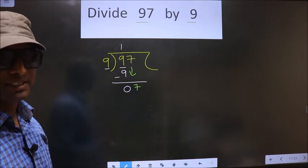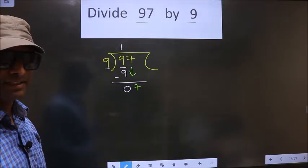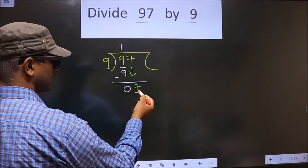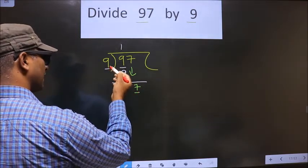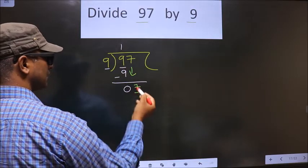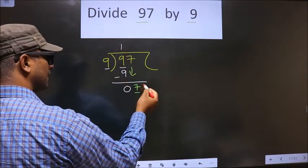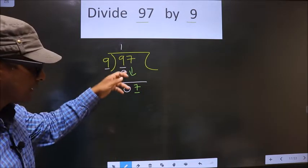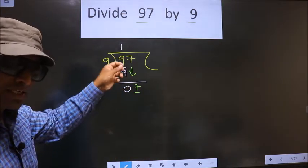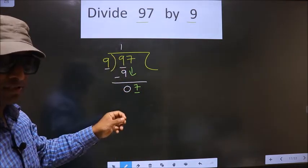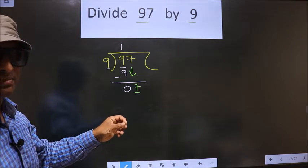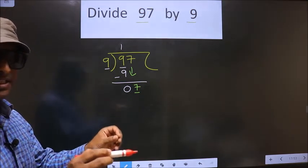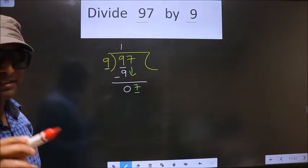This is where the mistake happens. We now have the number 7, and 7 is smaller than 9. What many people do is they put a decimal point here and take a 0 — but that is wrong. You have just brought the number down, and in that same step you want to put a dot and take a 0. Doing both in the same step is wrong.